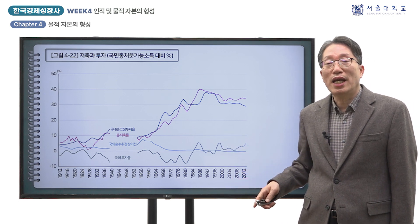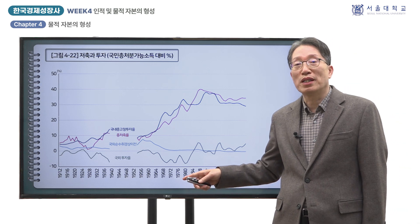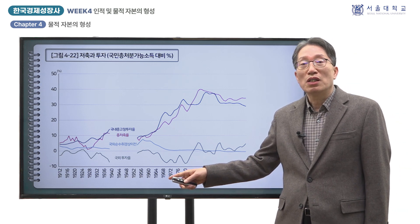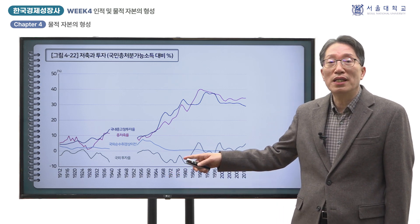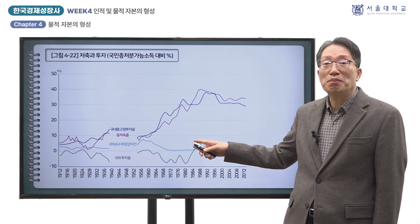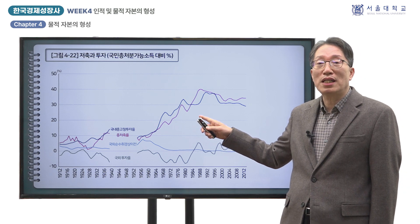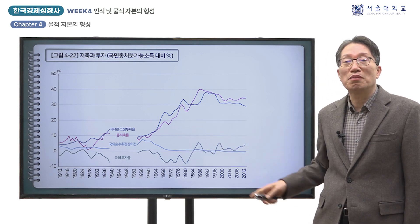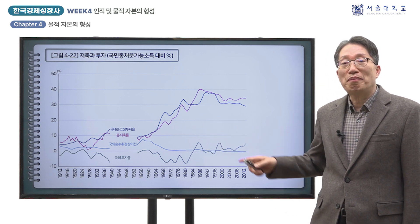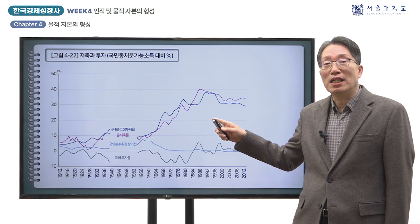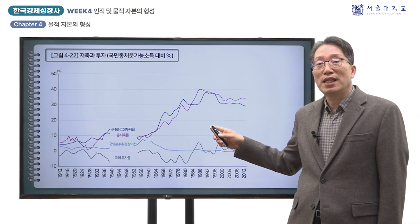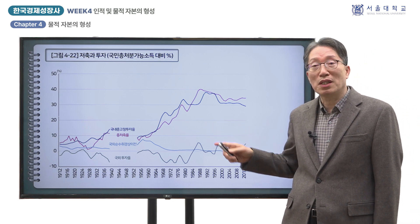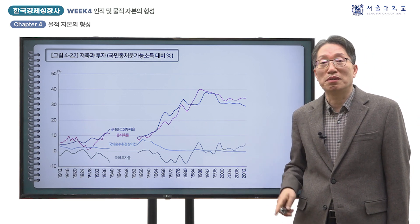총저축률을 보면 유사한 추이를 보여 1988년에 40%까지 상승했다가 하락하는 양상을 보이고 있습니다. 투자율의 빠른 상승이 저축률에 의해서 뒷받침되고 있었다는 것을 알 수 있습니다.